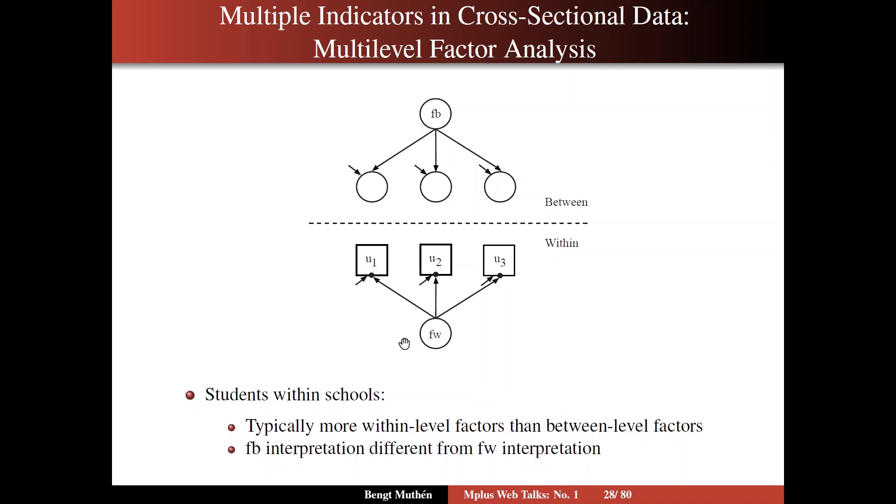Typically, you would have many more factors on the within-level than on the between-level. So on the within-level, you could have abilities representing mathematics, reading, science performance. So maybe three factors.